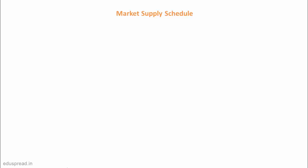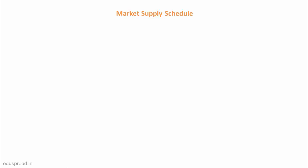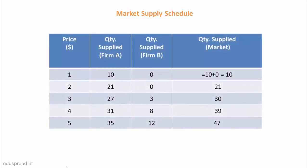We can derive the market supply curve just like we derived the market demand curve. Let's assume that there are only two firms in the market that supply Good Eggs, and these are their supply schedules. We can derive the market supply schedule by adding the quantity supplied by all firms at different prices. As you can see in column 4, the entire market supplies 10 units when the price is $1, 21 units when the price rises to $2, and 30 units when the price rises to $3.